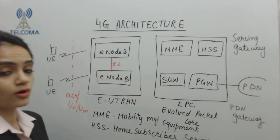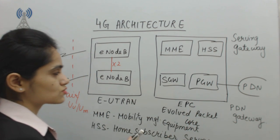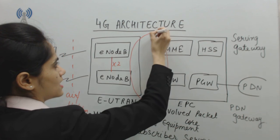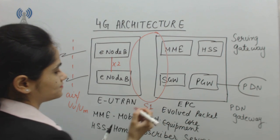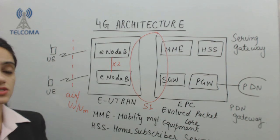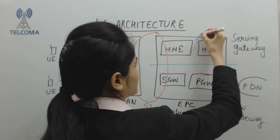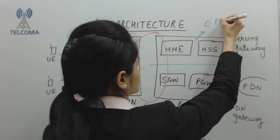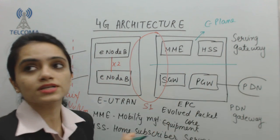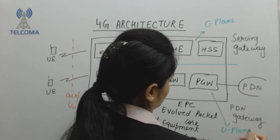The interface between the EUTRAN part and the Evolved Packet Core is known as S1 interface. This architecture is divided into two parts: C-plane, which is also known as control plane or signaling plane, and U-plane, which is user plane.